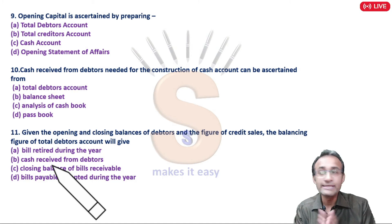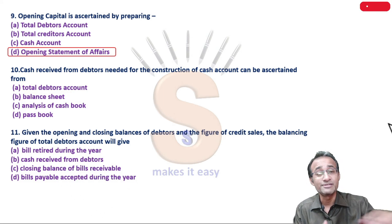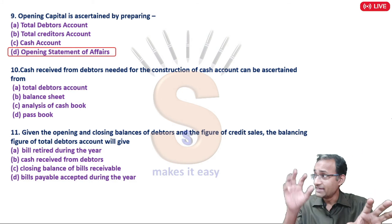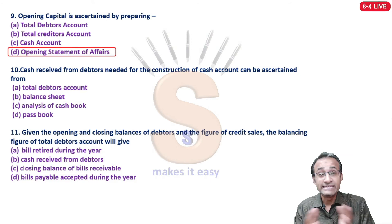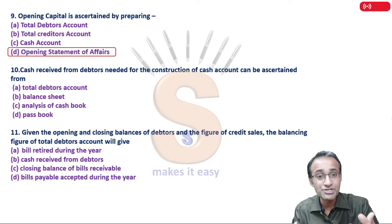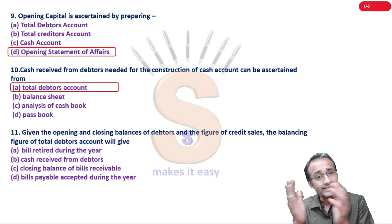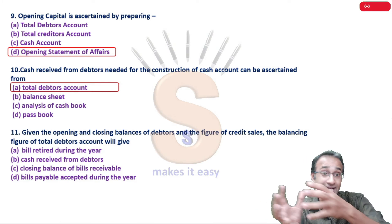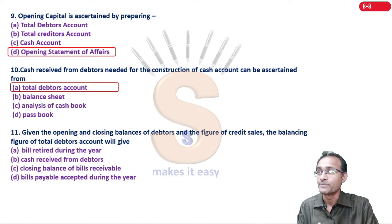Question nine: Opening capital is ascertained by preparing an opening statement of affairs. That is the reason we prepare the opening statement of affairs - we list assets, list liabilities, subtract, and we get the opening capital. Question ten: Cash received from debtors, for the construction of the cash account, can be ascertained from the debtors account. From the debtors account you will get the answer of cash received, then transfer that to the cash account.